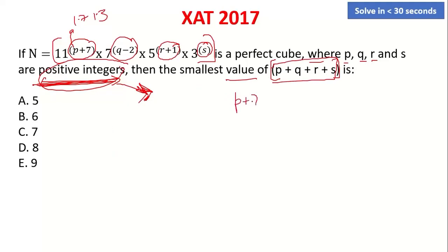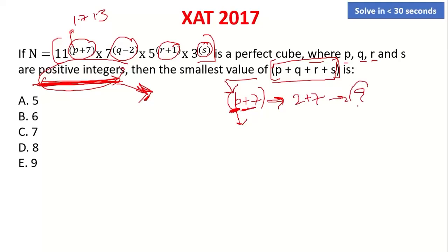The first part: 11 is raised to the power p plus 7. For a perfect cube, p plus 7 must equal 3 or a multiple of 3. If p plus 7 equals 3, then p equals minus 4 — but p must be a positive integer. So the closest multiple of 3 that is greater than 7 is 9, making p plus 7 equal to 9, therefore p equals 2.